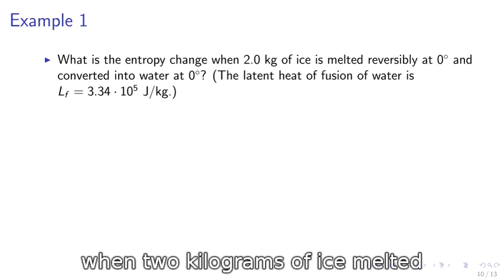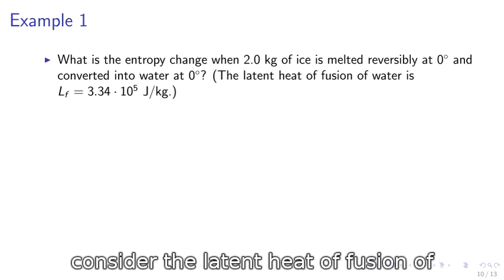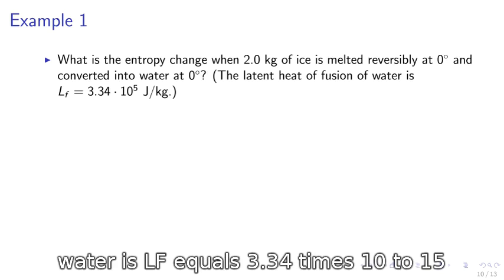Example 1. What does the entropy change when two kilograms of ice is melted reversibly at zero degrees Celsius and is converted into water at zero degrees? Consider that the latent heat of fusion of water is LF equals 3.34 times 10 to the 5 joules per kilogram.